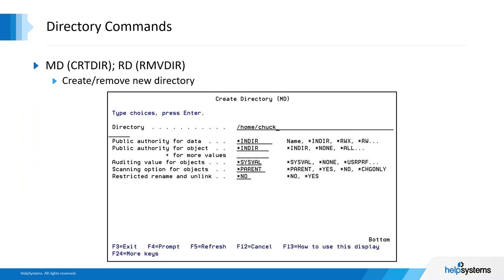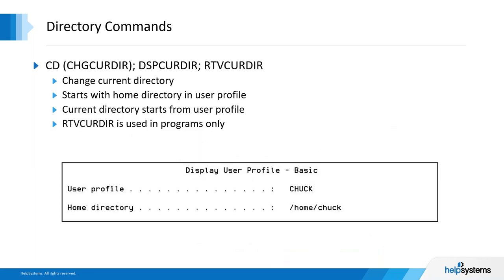Naming rules for make directory, change directory, and remove directory depend on one of the ten file systems. In this example, we've created Chuck a home directory in the root of the home directory. The authorities can be set for directories and objects. If you take the slash imdir default authority, that means you're going to inherit the authority from the directory above it — in this case, the root. You can also specify access control. Very powerful, similar to green screen IBM i.